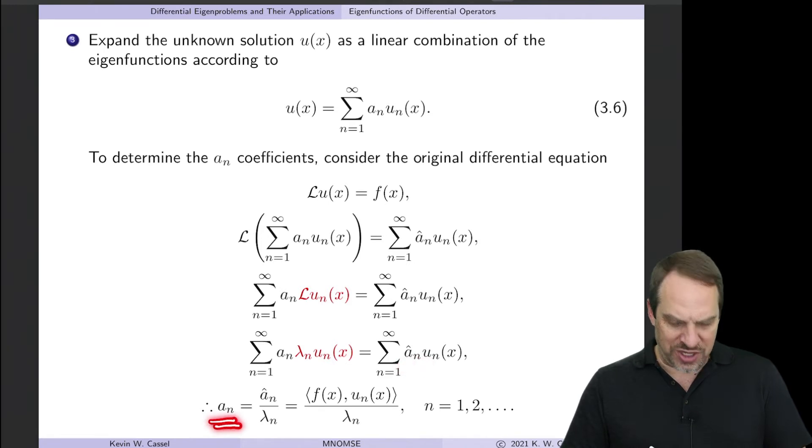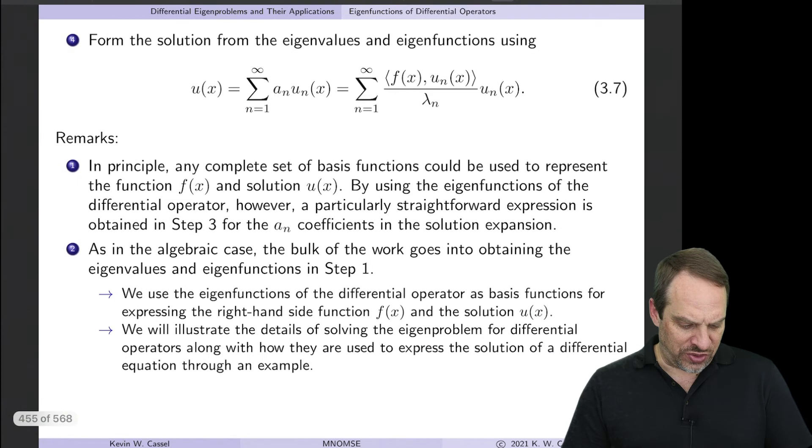So therefore, solving for A sub n, which we don't know, that's A sub n hat divided by lambda. But A sub n hat, well, that's just the inner product of F with U sub n. Alright, so that's an expression now for A sub n. So that brings us to the fourth step, which is to put together the final solution in terms of this eigenfunction expansion of the differential operator.